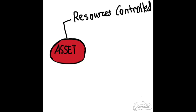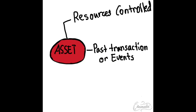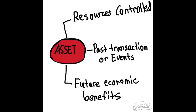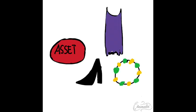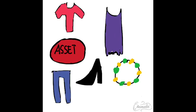So what are those? First, an asset is a resource controlled by the entity as a result of past transactions or events and from which future benefits are expected to flow to the entity. So her assets in her company are her dresses, shoes, bracelets, pants, tops, and so on.